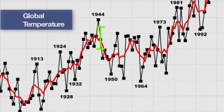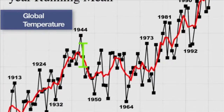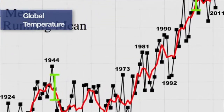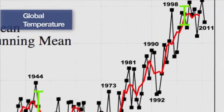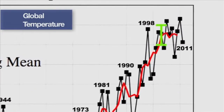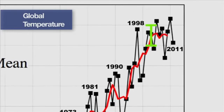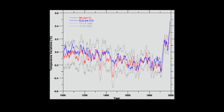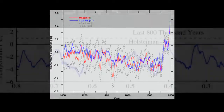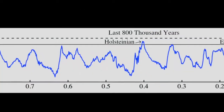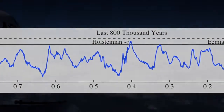Climate change refers to changes in these statistics over seasons and year-to-year changes as well as decades, over centuries, and even over thousands of years — as with how Earth moves in and out of ice ages and warm periods.